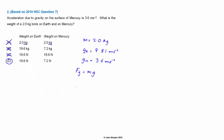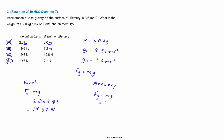For completeness, we'll also do the calculation mathematically. First, the weight on Earth: F_g equals mg, so 2.0 multiplied by 9.81 gives 19.62 Newtons. Then the weight of the brick on Mercury using the same formula: 2.0 kilograms multiplied by 3.6 m/s² gives 7.2 Newtons. Therefore, once again, the answer is D.